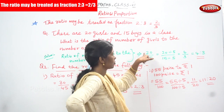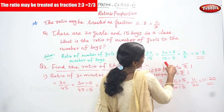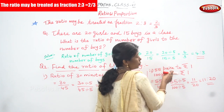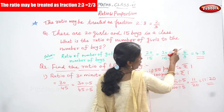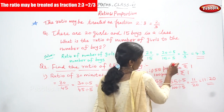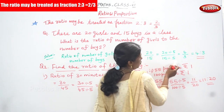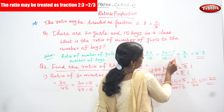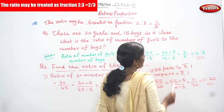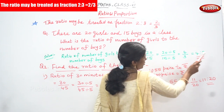So you have to simplify this division, otherwise you can call it a fraction. You have to take the common divisor. 20 is divided by 5 you can get 4, and 15 is divided by 5 you can get 3. So you get 4 by 3, and the ratio is 4 is to 3.